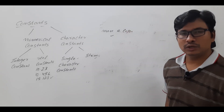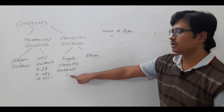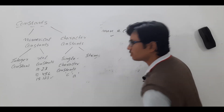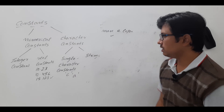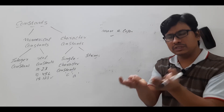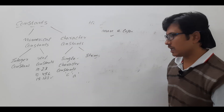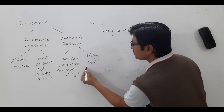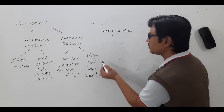Now coming to single character constants — you have a character. For example if you want to use the character 'C', you enclose it within single quotation marks. This is how you represent single character constants. If you want to represent character 'A', use single quotation marks. Always remember: single character constants are enclosed within single quotation marks. Whereas strings — a collection of single character constants — are enclosed within double quotation marks. For example, 'h' and 'i' are individual characters, but "hi" or "how" are strings enclosed in double quotation marks.